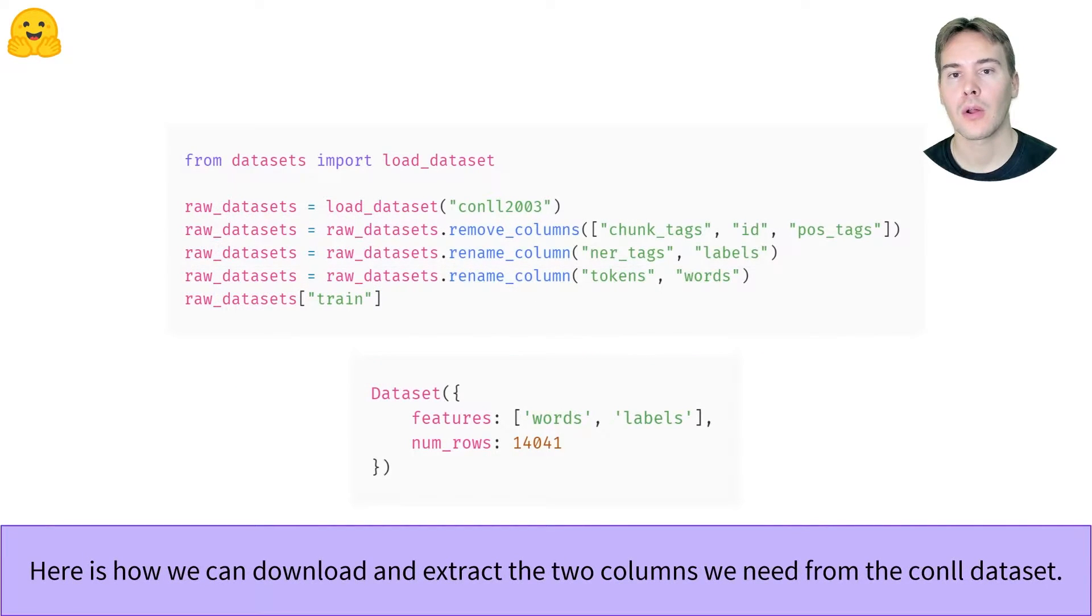For example, we'll use a CoNLL dataset, in which we remove columns we won't use and rename the other ones to get to a dataset with just two columns: words and labels.